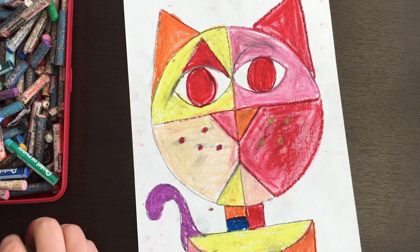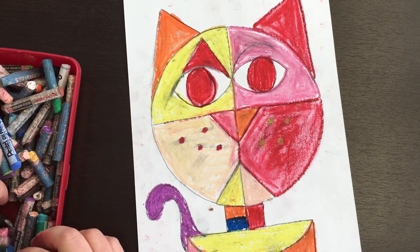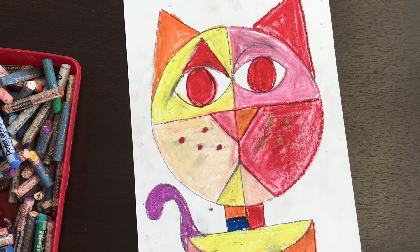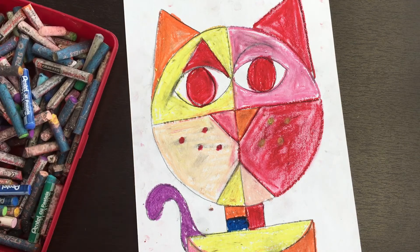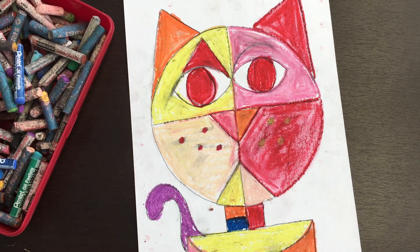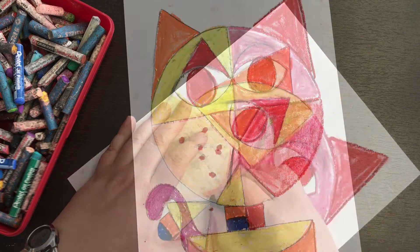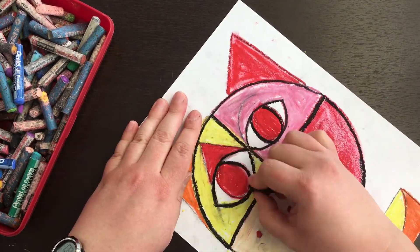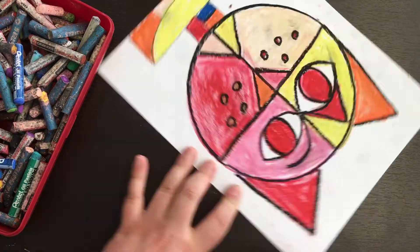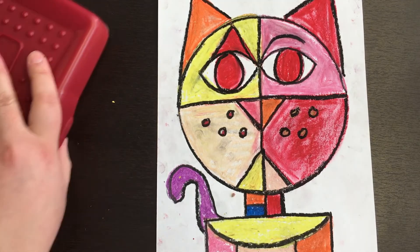So now that it's done being colored, I need to trace. So you need to find a black oil pastel. You might have a little one somewhere in your box, and we are going to trace everything. So if it was pencil before, it needs to be black oil pastel now.